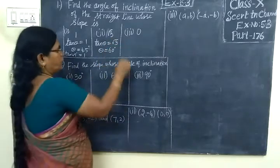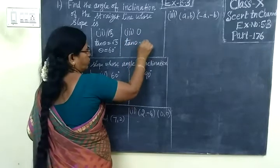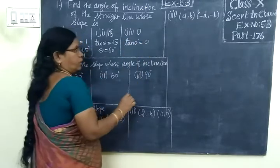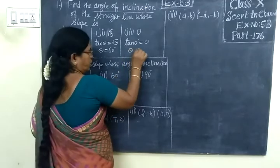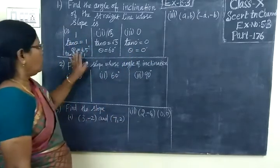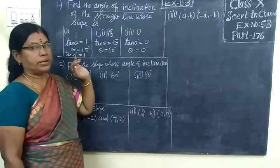Next is 0. Tan 0° equals 0, which means θ equals 0 degrees. All these values we know already. It is coming naturally itself.